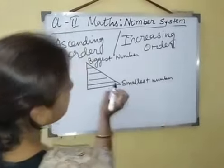Now coming to descending order — the reverse of ascending, that means biggest to smallest. So: 700, 500, 300, 200, and at last 100. So this is the ascending and descending order.